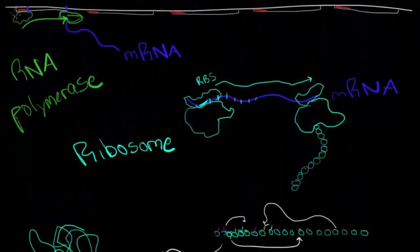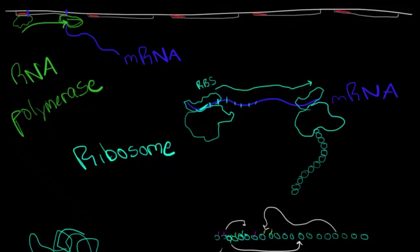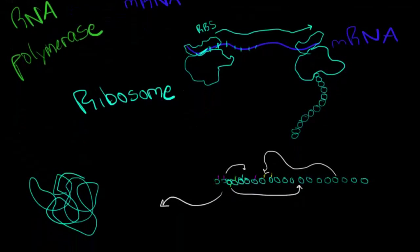So just to be clear, this part here where the RNA polymerase turns double-stranded DNA into mRNA, the single-stranded molecule, is called transcription. And this part here, where you take the mRNA and turn it into an amino acid sequence, is called translation.